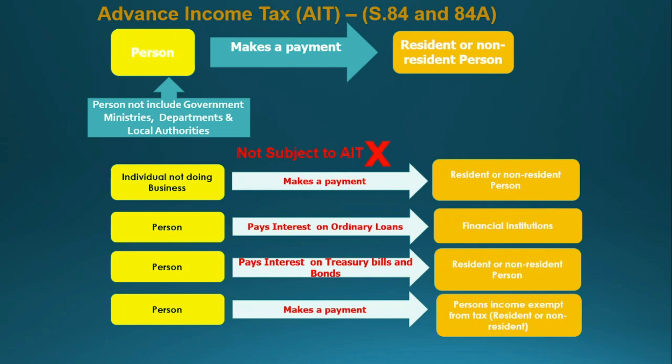The third exclusion is that on behalf of the government, the Central Bank of Sri Lanka issues and pays interest or discount on treasury bills and treasury bonds. In that case, the Central Bank will not deduct withholding tax or advance income tax on those payments. However, it is not an exemption — it is only an exclusion for withholding tax. Therefore, persons who receive interest on treasury bills and bonds must include those amounts in their taxable income and make tax payments under the Inland Revenue Act.